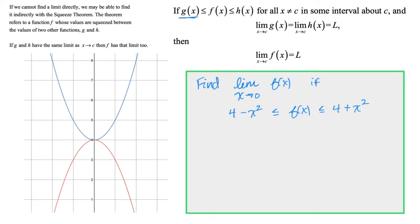Right here we have g of x, h of x, and f of x. And as you can see with these less than signs, g of x is less than f of x, and h of x is larger. So we have an example here.